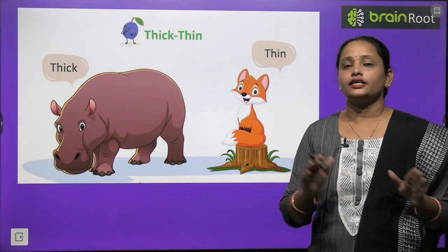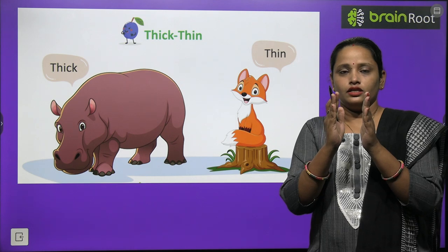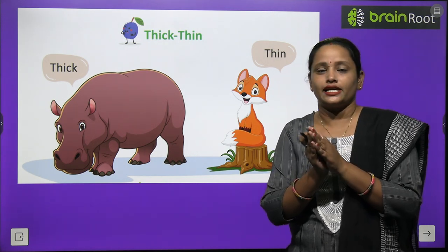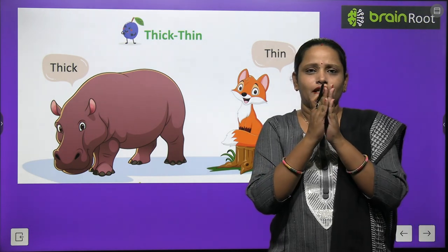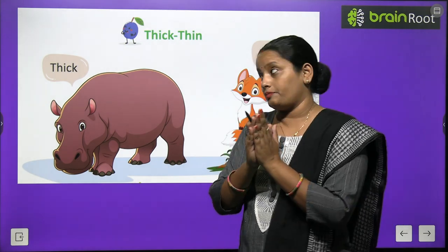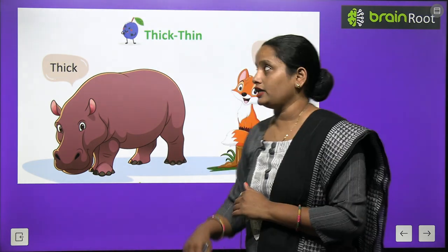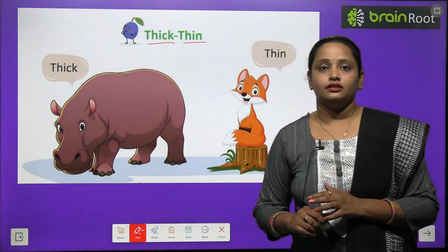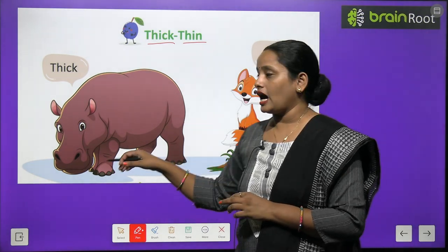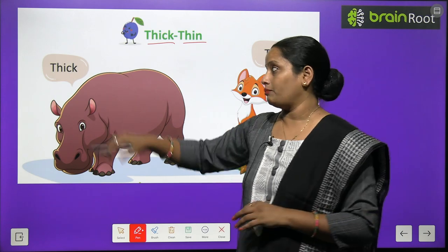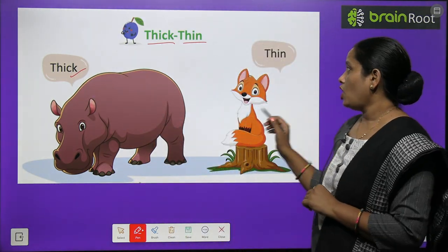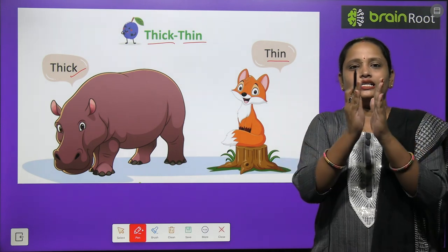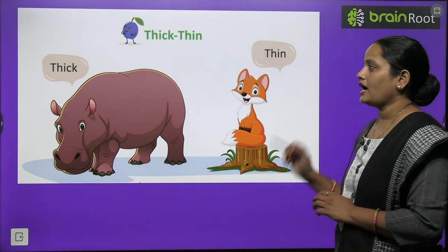Next is thick and thin. Thick means mota — jis ki chaudai zyada ho. And thin means patla. Toh aap school jaate hain na, bohot saari books aur notebooks leke jaate ho. Toh jo books hoti hain, woh bohot hi patli patli hoti hain — means thin. Or jo copies hoti hain, woh moti moti hoti hain — means thick. Yahaan pe ek hippo hai — hippo kaisa hai? Mota, means thick. Or yahaan pe ek fox hai, jo ki hai thin, patla sa. So these are thick and thin.